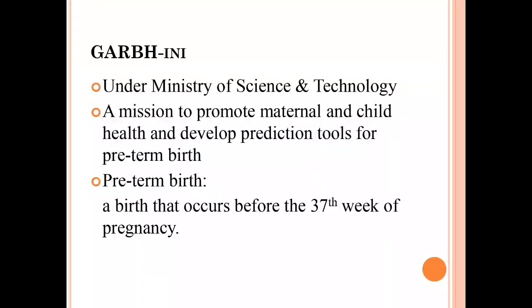GARBINI is a mission to promote maternal and child health and to develop prediction tools for preterm birth, in order to reduce the prenatal mortality rate in India. This mission has been developed under the Ministry of Science and Technology. Preterm birth is birth that occurs before the 37th week of pregnancy. This acronym can be asked in UPSC Prelims and also used in GS Mains paper.